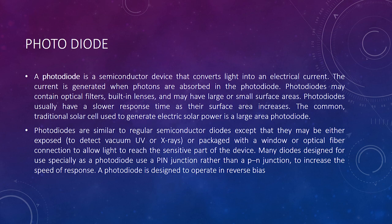Photodiodes are similar to regular semiconductor diodes, except that they may be either exposed or packaged with a window or optical fiber to allow light to reach the sensitive part of the device. Many diodes designed for use as a photodiode use a PIN junction rather than a PN junction. To increase the speed of response, a photodiode is designed to operate in reverse bias.